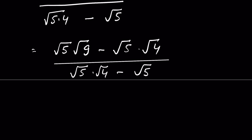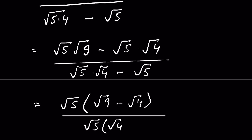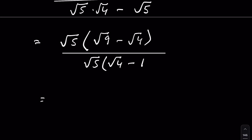Now we take square root of 5 common from both numerator and denominator. The numerator becomes square root of 5 times square root of 9 minus square root of 4, and the denominator becomes square root of 5 times square root of 4 minus 1. The square root of 5 in the numerator and denominator cancel.